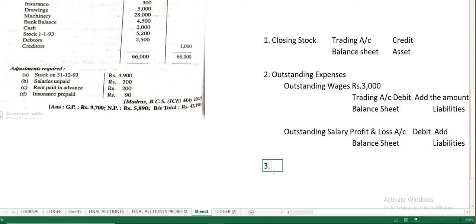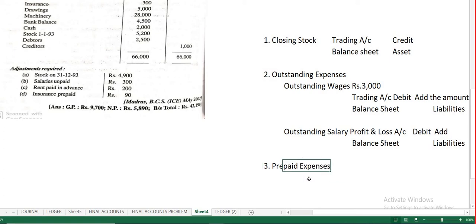So far we have discussed closing stock and outstanding expenses. Moving to the third adjustment — prepaid expenses. Prepaid expenses means paying in advance, for example unexpired insurance or insurance paid in advance.